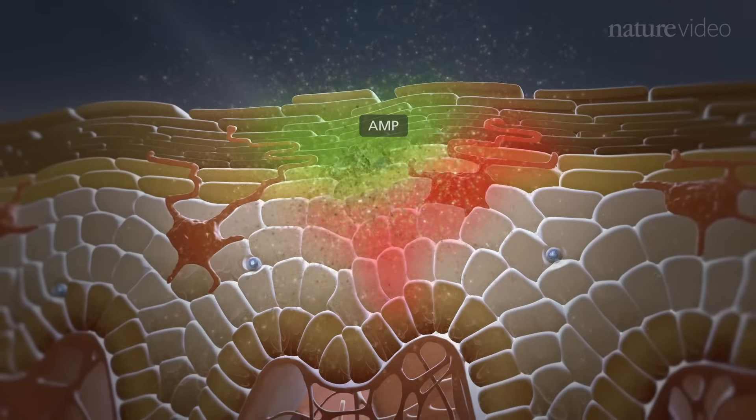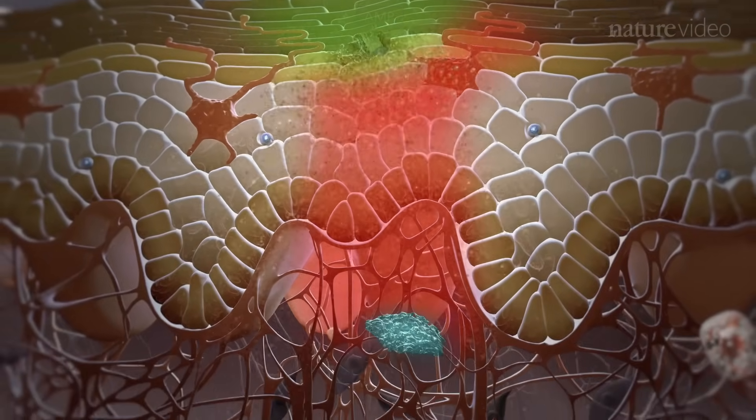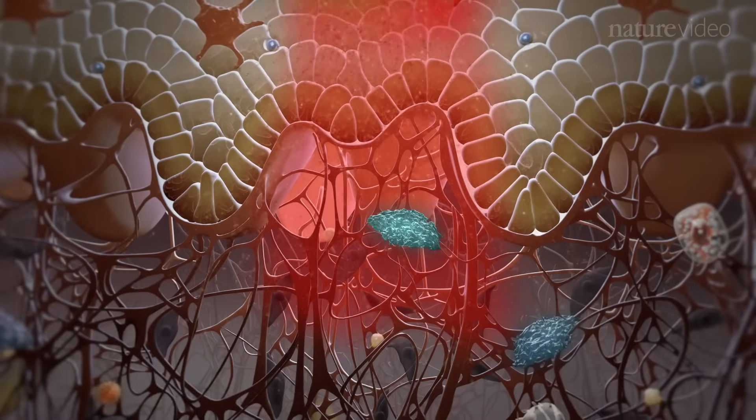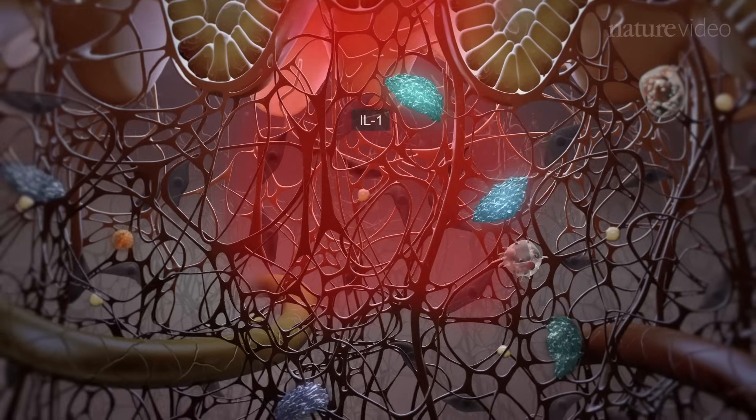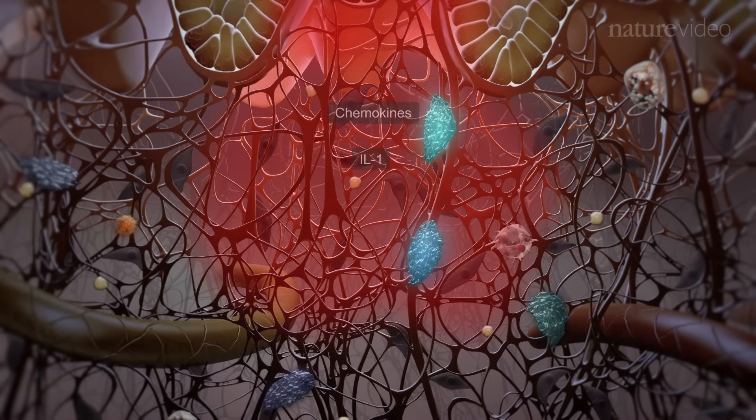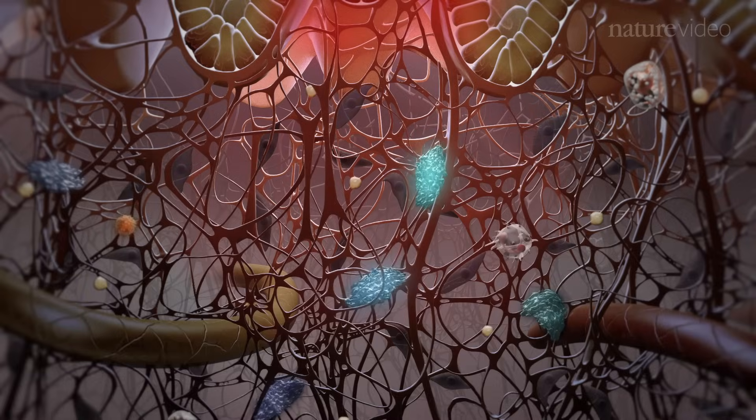Keratinocytes produce antimicrobial peptides, which can kill bacteria directly, inflammatory mediators such as interleukin-1 or IL-1, which activate dendritic cells, and chemokines, which recruit neutrophils, macrophages and T-cells.